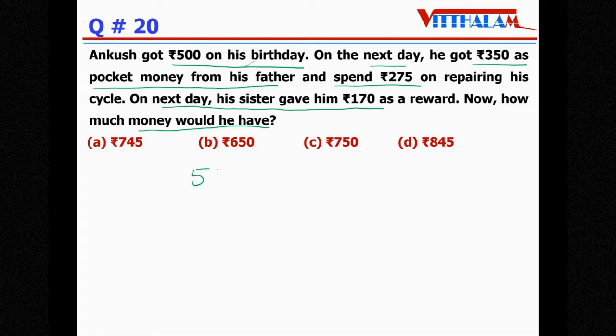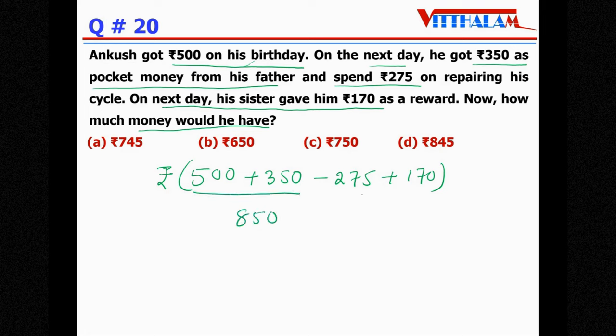Now how much money would he have? It's a very simple numerical, it's just addition subtractions. So initially Ankush had 500 rupees, from his father 350, then spent 275 so deduct, and next day his sister gave him 170 so add. Now if you just simplify, 500 plus 350 so 850 minus 275 plus 170, so 275 minus 170 let's take the difference, so rupees 850 minus 105, that means 745, so rupees 745 that means option a.